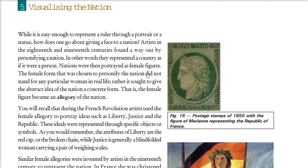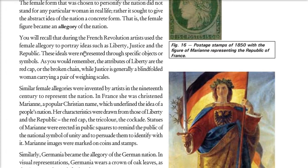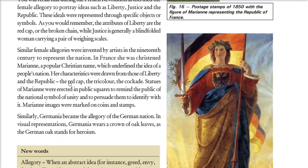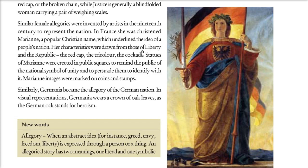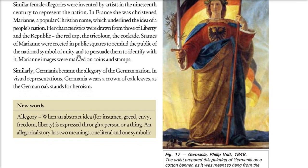The symbol of unity — Marianne images were also marked on coins and stamps. When it comes to Germany, here is a picture of Germania. She is wearing a crown of oak leaves, which for Germans symbolized heroism. This is a postage stamp of 1850 with the figure of Marianne representing the Republic of France. So women were used as allegory.